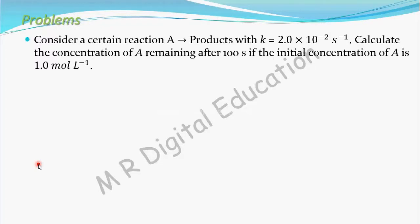Let's see one more problem on first order reaction. Consider a reaction A gives product with K equal to 2.0 into 10 to the power minus 2 per second. Calculate the concentration of reactant A remaining after 100 seconds if the initial concentration of A is 1.0 mole per liter.